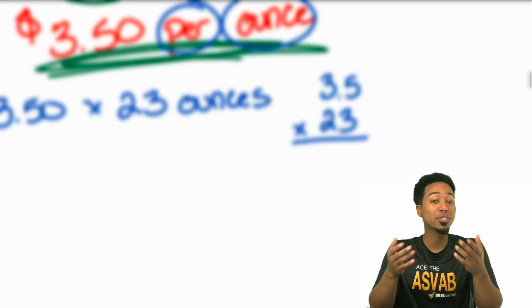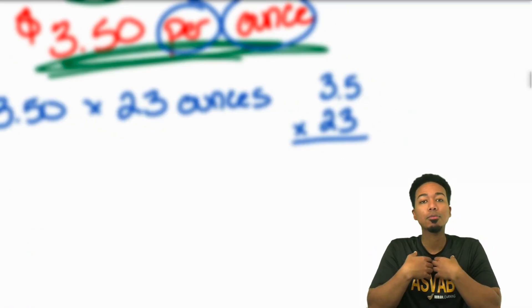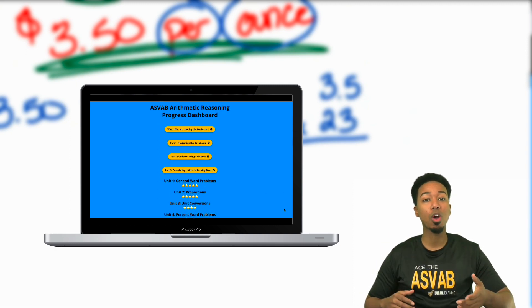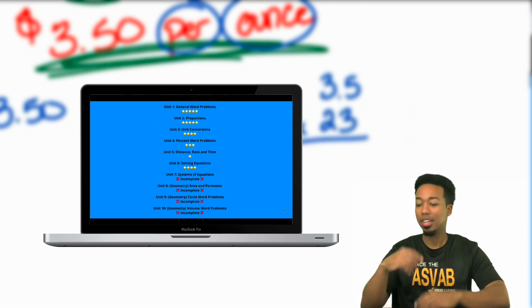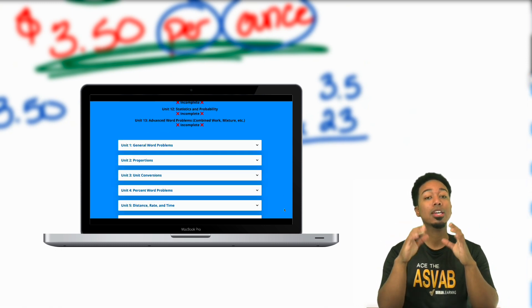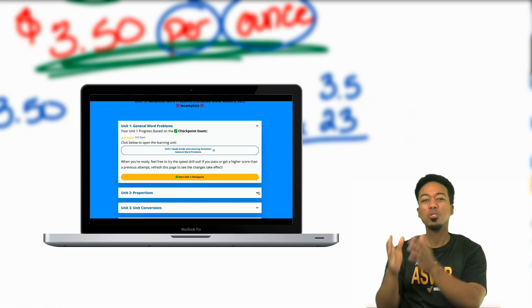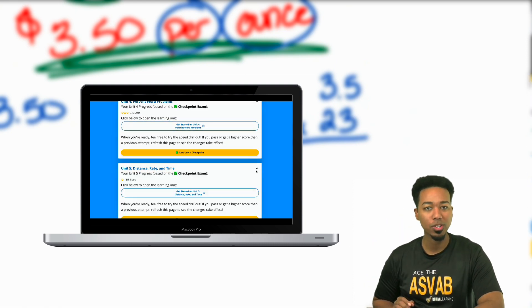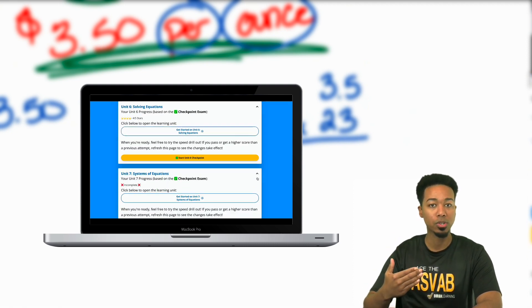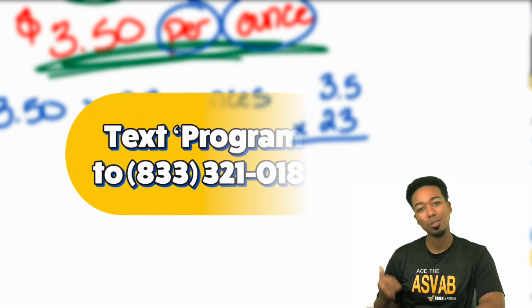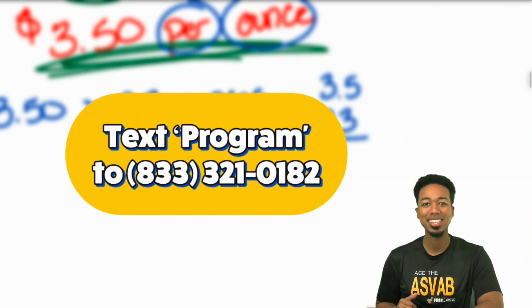One of the most engaging and fun to use resources that I offer is my arithmetic reasoning progress dashboard. Imagine being able to track your progress concept by concept, like proportions, distance rate time problems, systems of equations. Imagine being able to guarantee that by the end of it all, you know exactly what you're supposed to be doing. That's how our progress dashboard works. Check that out in our full program and let's ace the ASVAB.